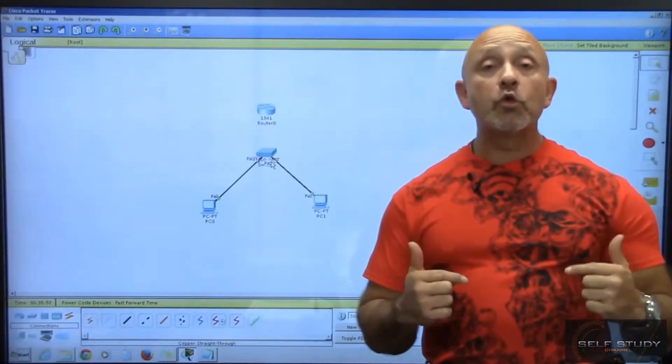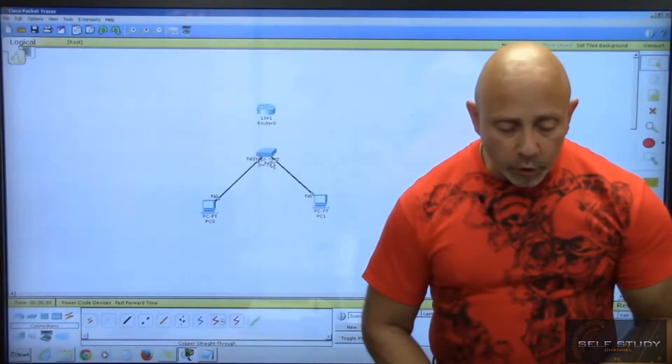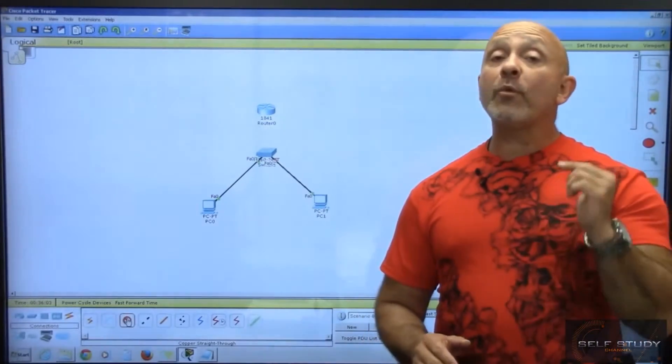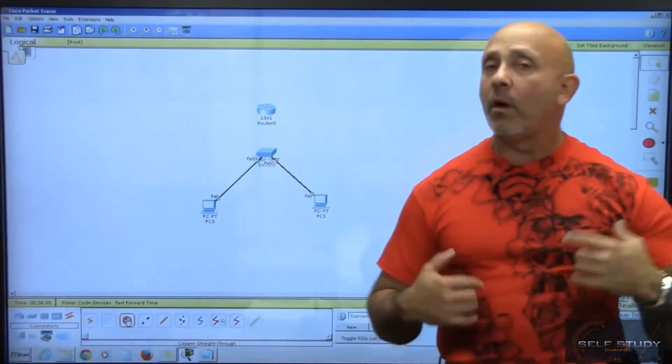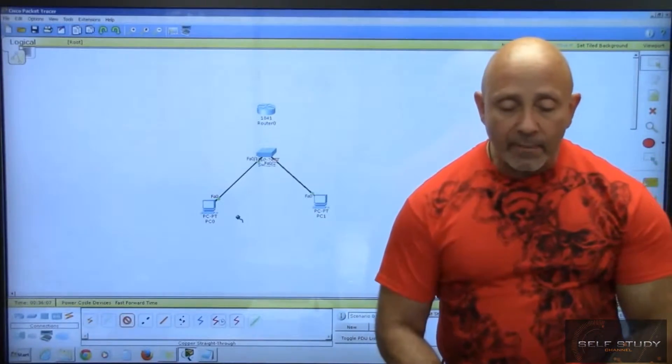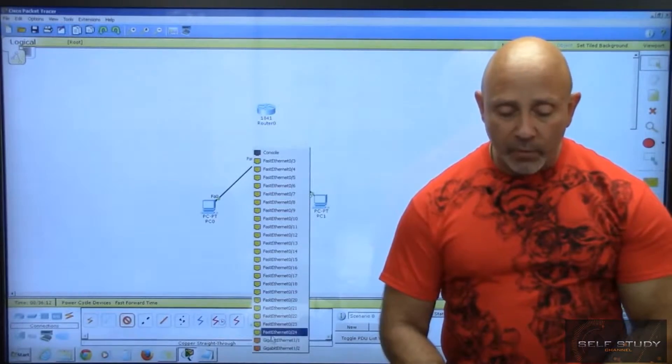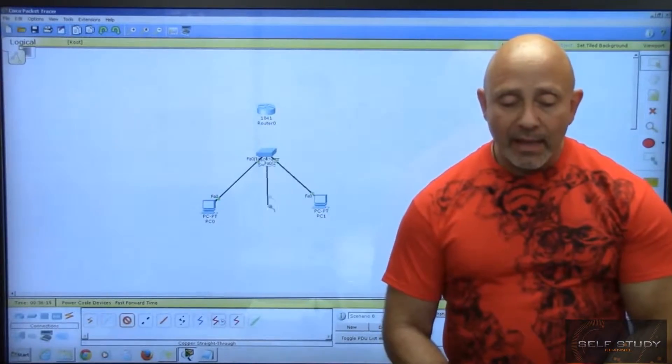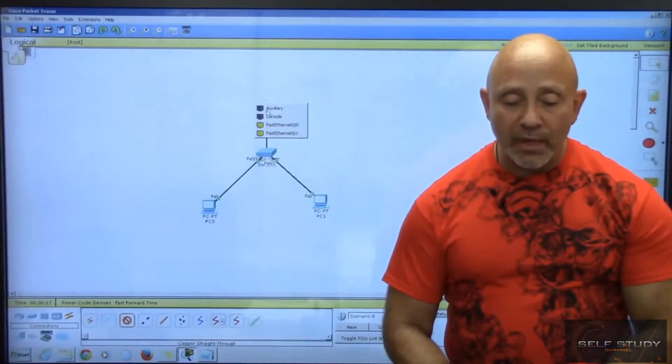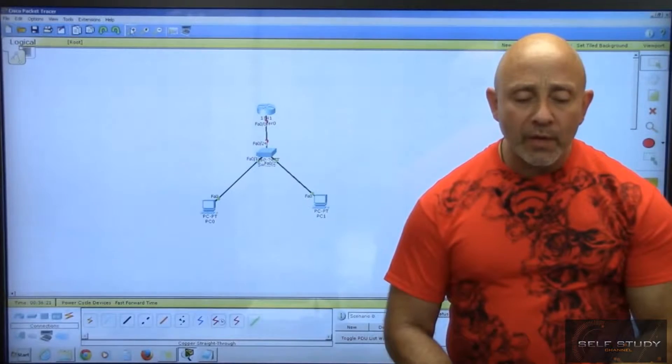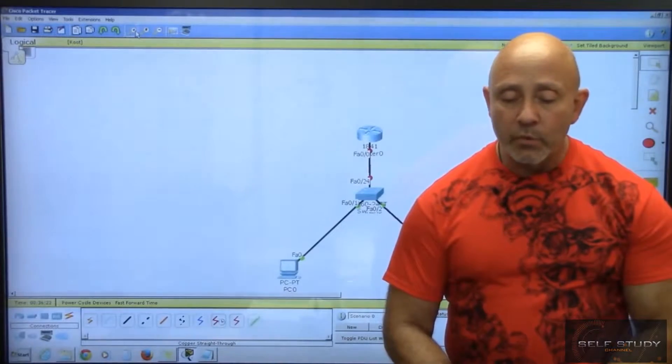And then when we go from a switch to a router, we also want a copper straight-through. Now when we go from a switch to a router, I know I mentioned it before, I'm going to mention it again. When I select the switch, I pick F024, and then I choose F00. I usually always choose F00, and I'm zooming it in so you can see it very well.